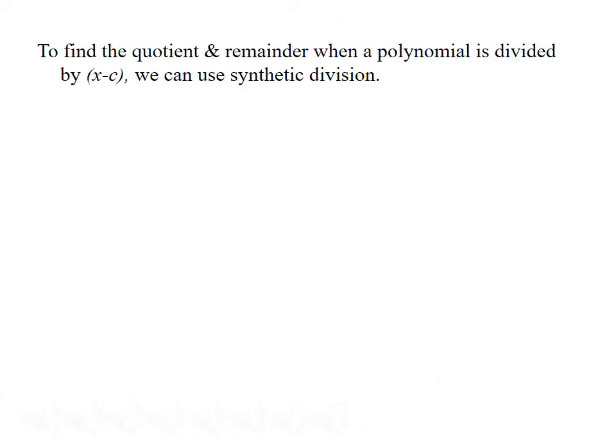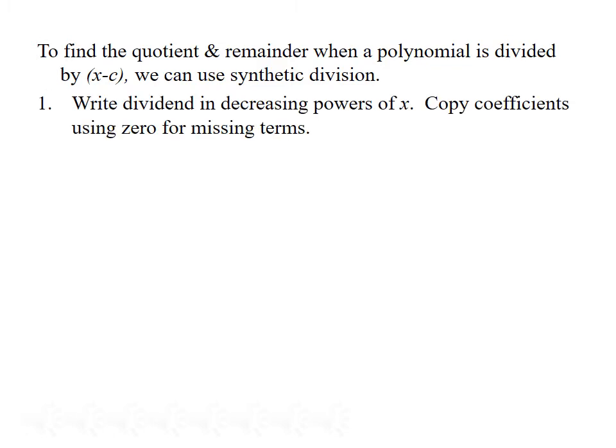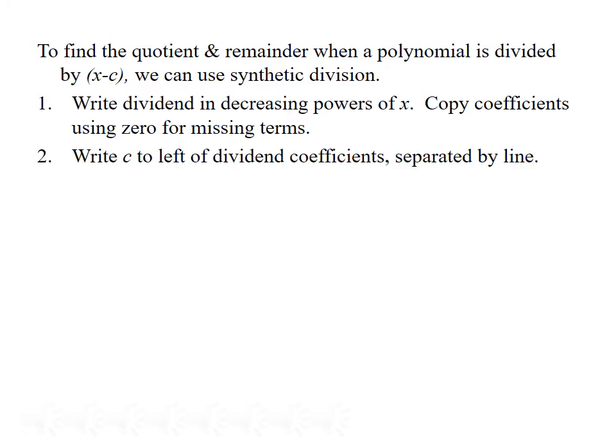An alternative to long division for certain problems is called synthetic division. To find the quotient and remainder when a polynomial is divided by a factor of the form x minus c, we can use synthetic division. First, we write the dividend in decreasing powers of x and copy the coefficients, using 0 for any missing terms. Next, we write the value c to the left of the dividend coefficients, separated by a vertical line.